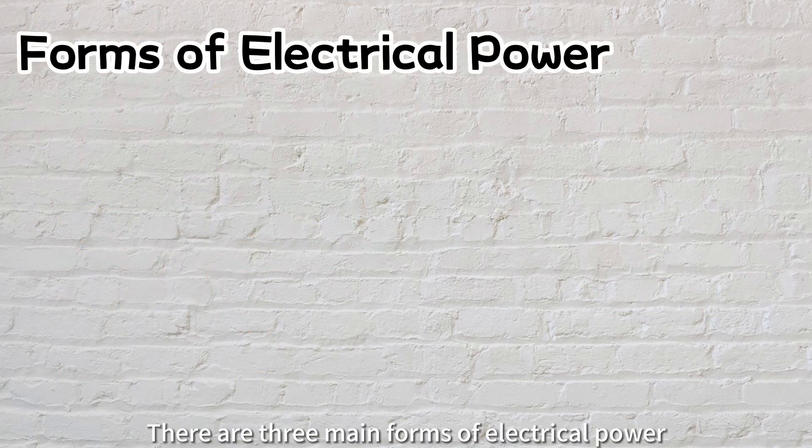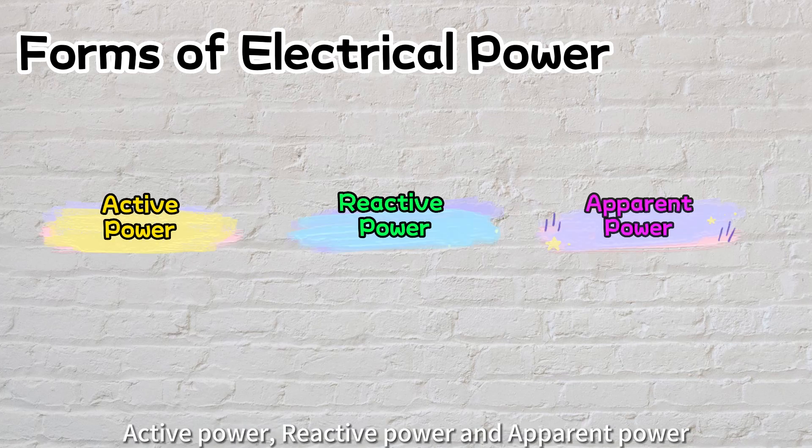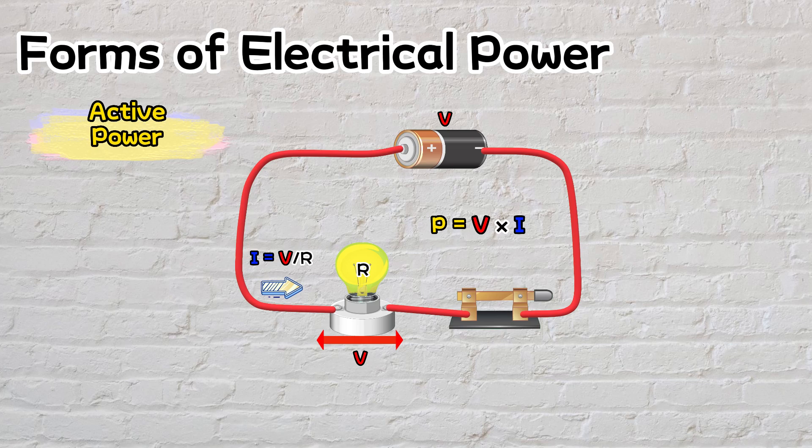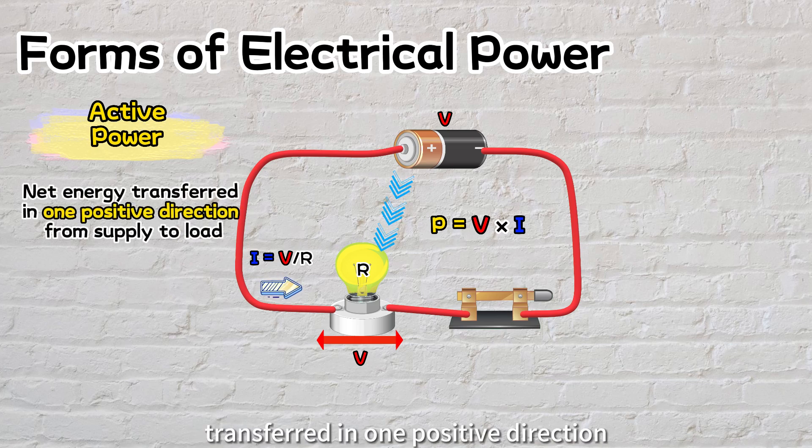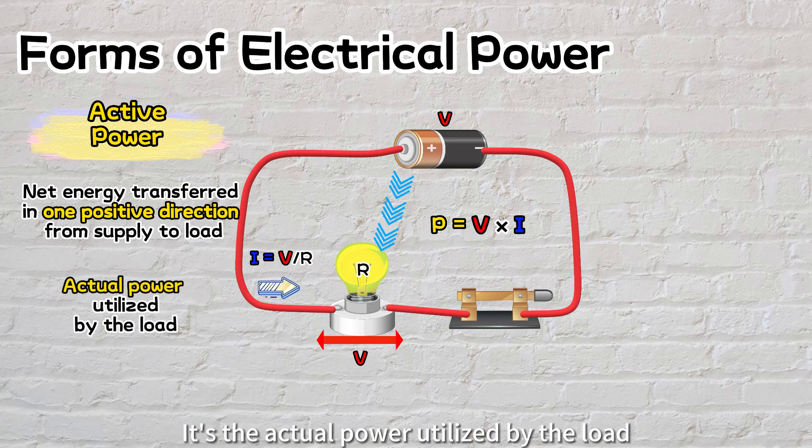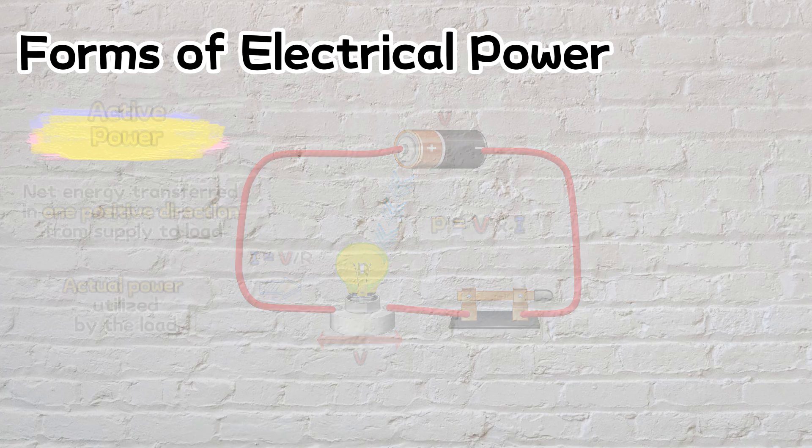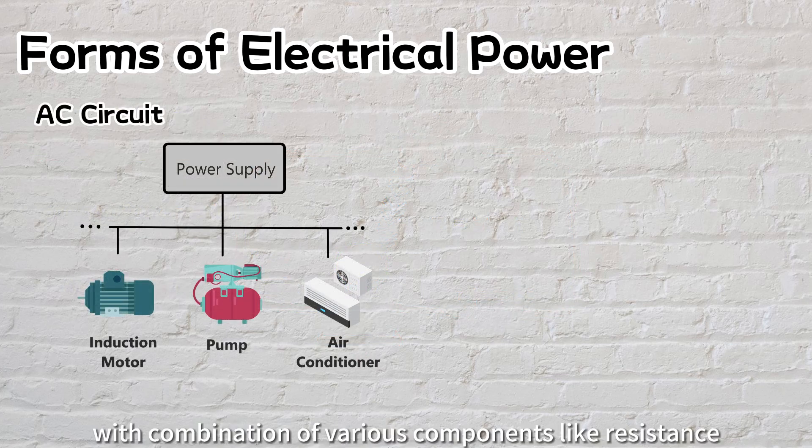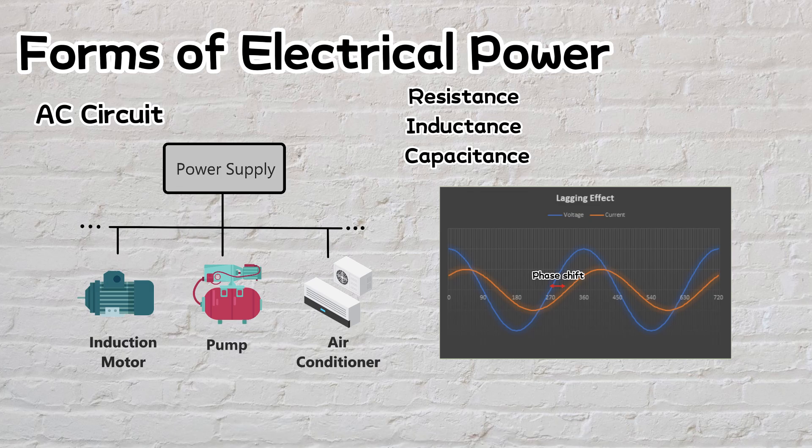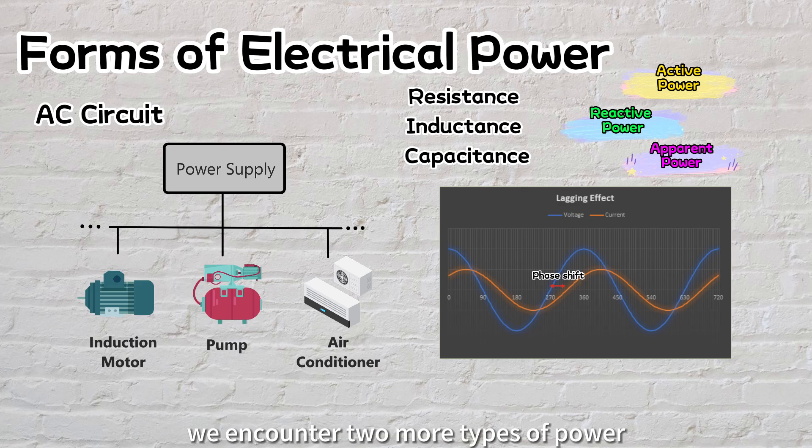There are three main forms of electrical power: active power, reactive power, and apparent power. In a DC circuit, as we explored in the previous examples, the power is active power. Active power represents the net energy transferred in one positive direction from the power source to the electrical load. It's the actual power utilized by the load. In AC circuits with combinations of various components like resistors, inductors, and capacitors, these components cause a phase difference between voltage and current. As a result, apart from active power, we encounter two more types of power: reactive power and apparent power.